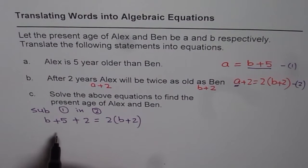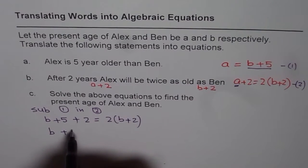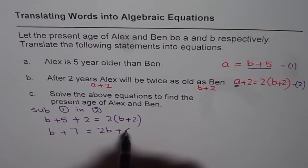Now, let's rearrange these equations. So first let's combine. So B plus 7 is equals to 2 times B plus 2 times 2 is 4.